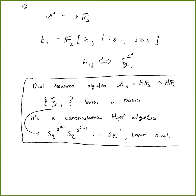The main point about the May spectral sequence is that the E1 term is quite easy to analyze. You can use the cobar complex of the dual Steenrod algebra, and the filtration by copowers of the unit coideal is compatible with the differential on the cobar complex. This gives a concrete way to compute low-degree differentials. May's observation was that there's a smaller resolution that computes this E1 page, since the cobar complex blows up in high degree.